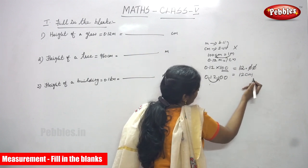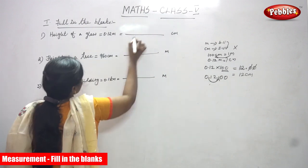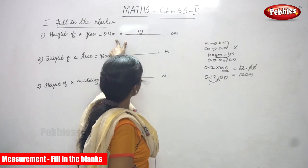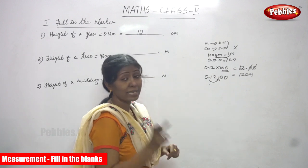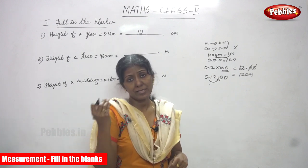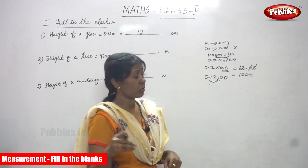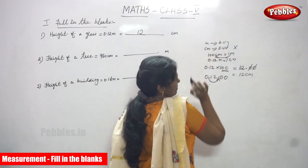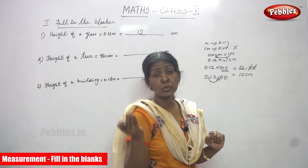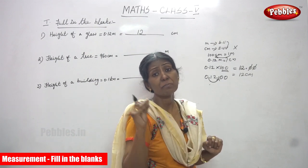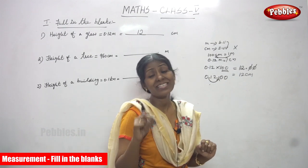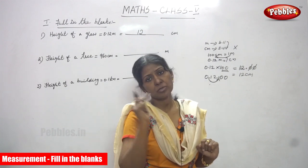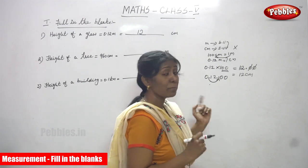To repeat: 0.12 meter converted into centimeters. Meter is a bigger unit, centimeter is a smaller unit. When you convert a bigger unit to a smaller unit, you multiply by 100, because 100 centimeters equals 1 meter. So 0.12 meter equals how many centimeters — you multiply by 100.